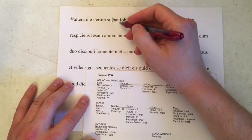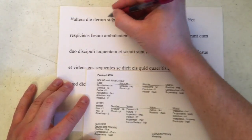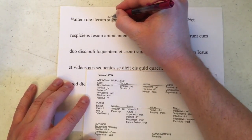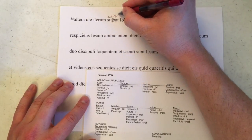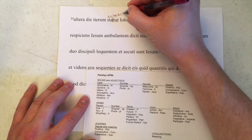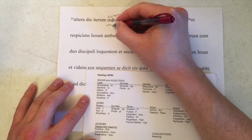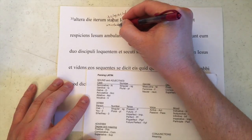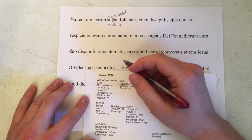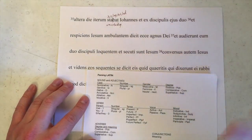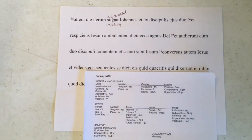The ending is -bat. This comes from the verb stare. It is the imperfect tense, third person singular, active and indicative, and it means 'was standing.' So we know that we want a singular subject — that doesn't mean that we will find one. Sometimes the verb itself plays the role of the subject as well.